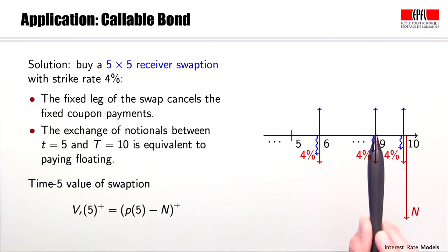The fixed leg payments cancel with the 4% coupon payments on the bond, and we know from the previous part that paying the notional N at time 5 is equivalent to paying the notional N at time 10 and floating in between.